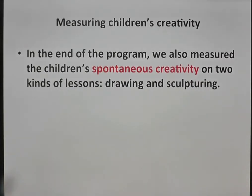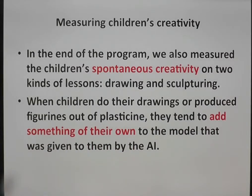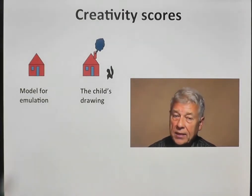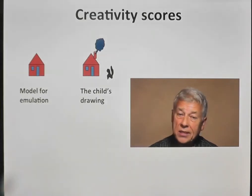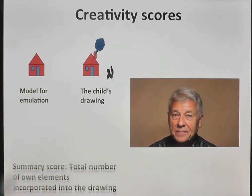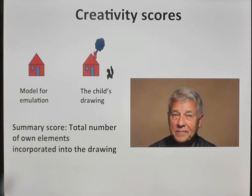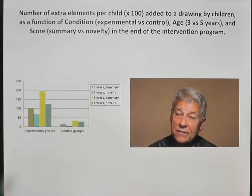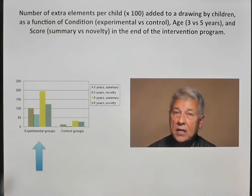At the end of the program, we also measured the children's spontaneous creativity on two kinds of lessons — drawing and sculpturing. When children do their drawings or produce figurines out of plasticine, they tend to add something of their own to the model given by the adult instructor. For instance, when asked to draw a house, one child copied the model but also added a chimney, smoke coming from the chimney, and a dog in the garden. We calculated summary scores (total number of own elements incorporated) and novelty scores (number of novel elements incorporated). As we can see from this graph, on the creativity scores, children in the experimental groups significantly — sometimes up to five times — outperformed the children from the control groups.